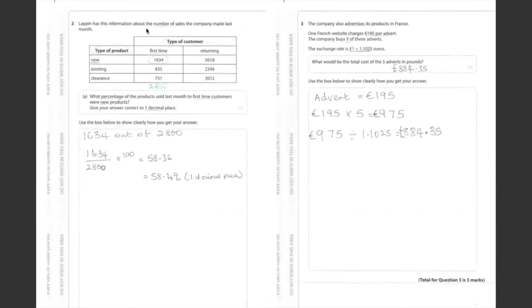Question 2. Here is the number of sales for the company. Three types of product: new, existing and clearance. And we've got two types of customers: first time buyer and returning customers. We're finding the percentage of the first time buyers who bought new product. Coming back to the table, that is 1,634 customers. So, 1,634 out of 2,800. That's 1,634 divided by 2,800. Now you multiply it by 100. Gives you 58.36.